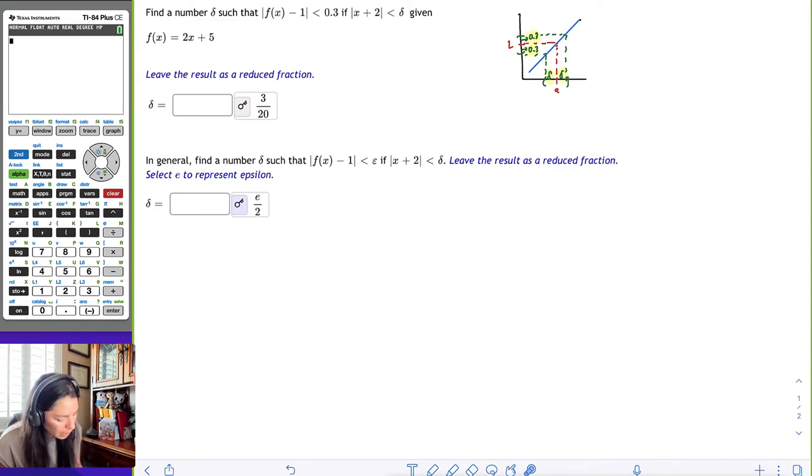I would go ahead and take |f(x) - 1| less than 0.3 and kind of work our way backwards. I would go ahead and put in what f(x) is, which is 2x plus 5. So we get |2x + 5 - 1| less than 0.3.